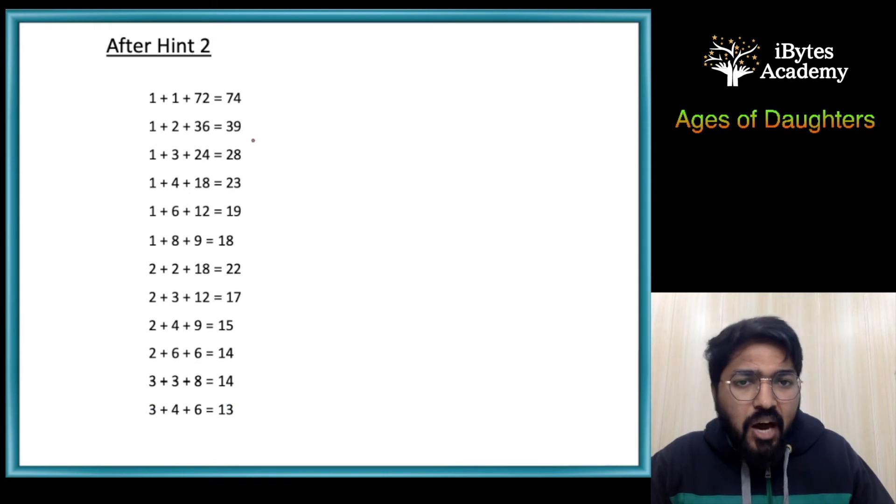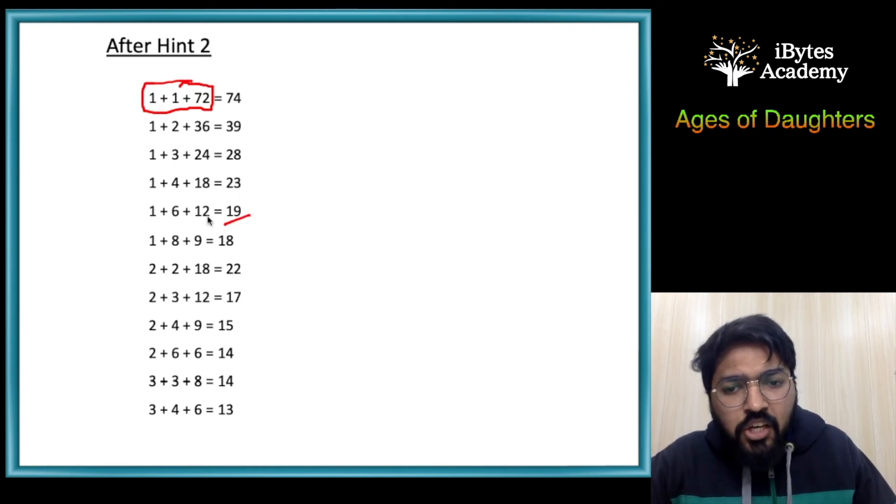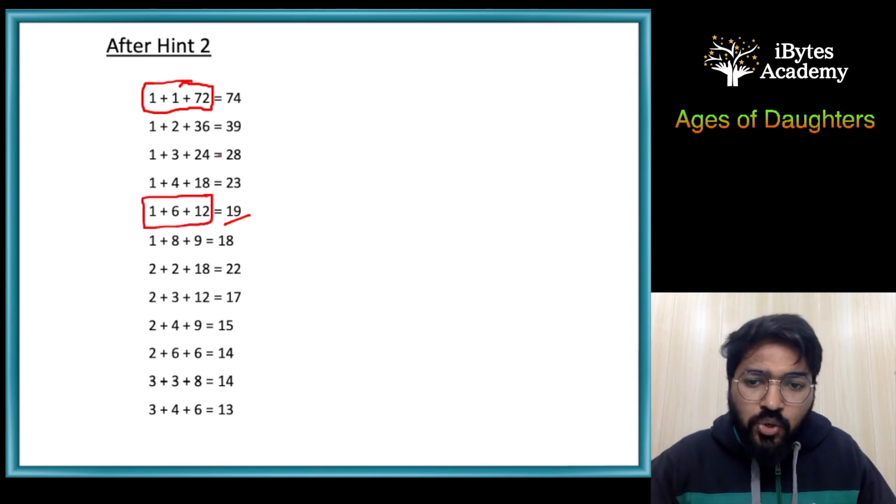Now if the house number was 74, Shyam would have been confident that the ages are 1, 1, and 72. Or if the house number was 19, he would have been confident that the answer is 1, 6, and 12. But since he is still not sure, the sum has to be 14.